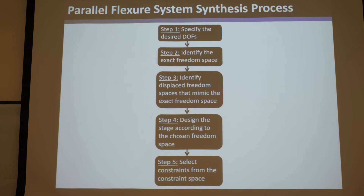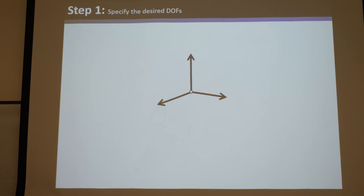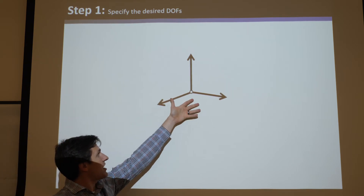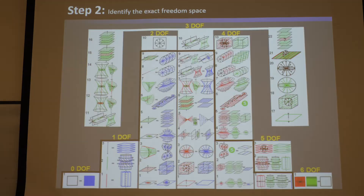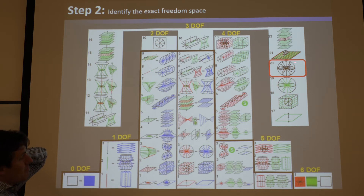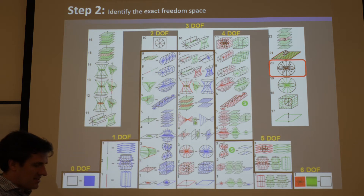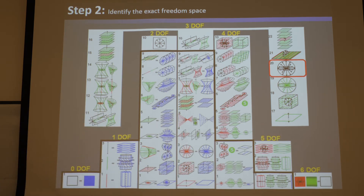Here are the systematic steps. Step one: specify the degrees of freedom you want. Say we want three orthogonal translations with no rotations. Step two: look it up on the fact chart. 3-DOF type 20 contains those three translations as its freedom space. This tells you you'd have to synthesize a serial or hybrid system — you can't do it with a parallel system exactly. But we can mimic it using the theory just taught.